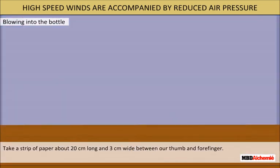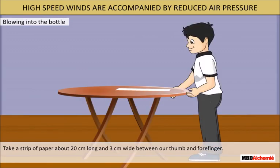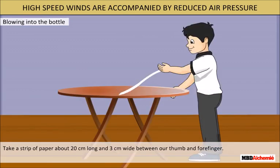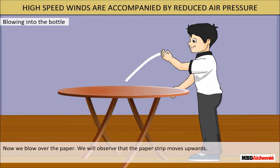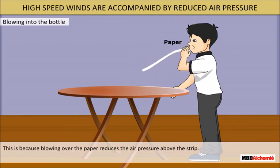Take a strip of paper about 20 cm long and 3 cm wide between your thumb and forefinger. Now blow over the paper. We will observe that the paper strip moves upwards. This is because blowing over the paper reduces the air pressure above the strip.